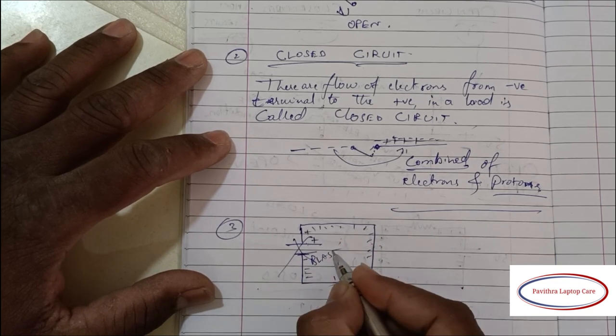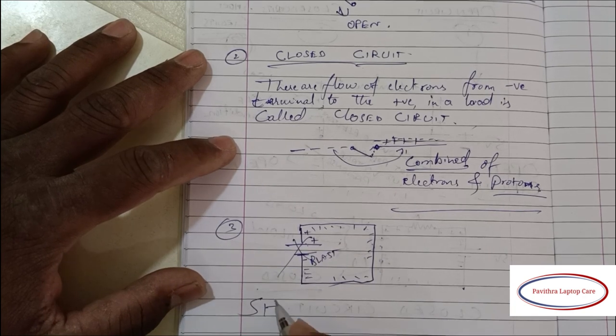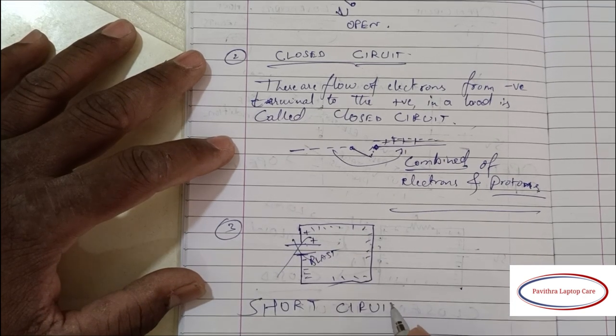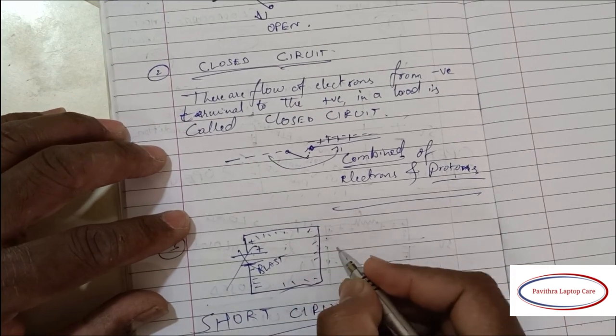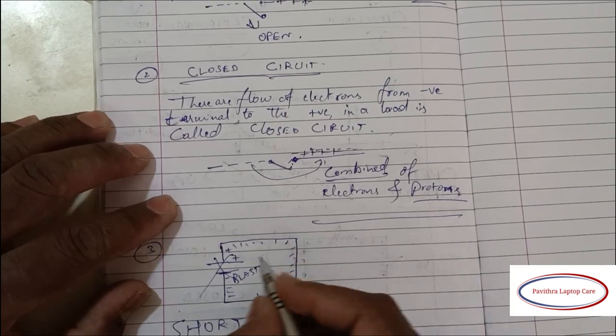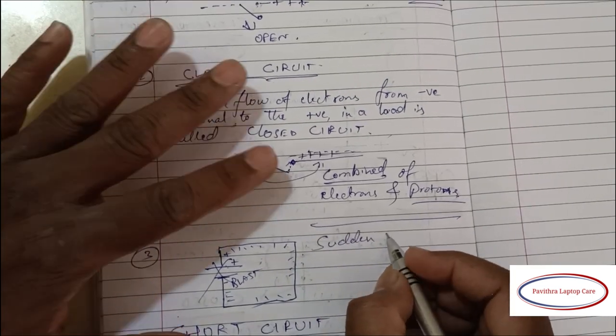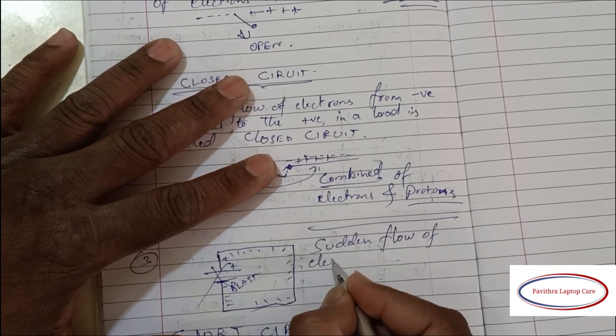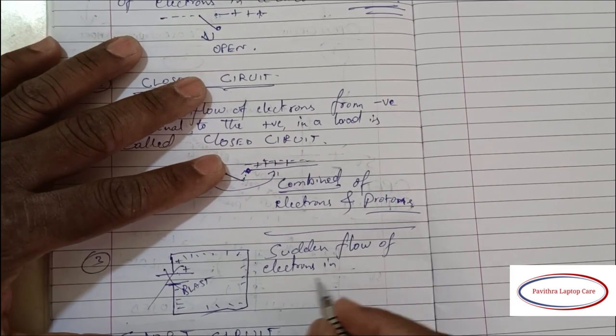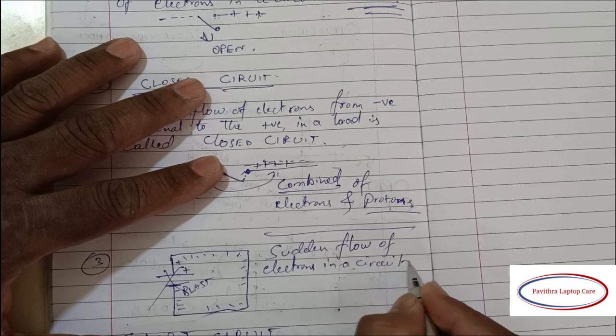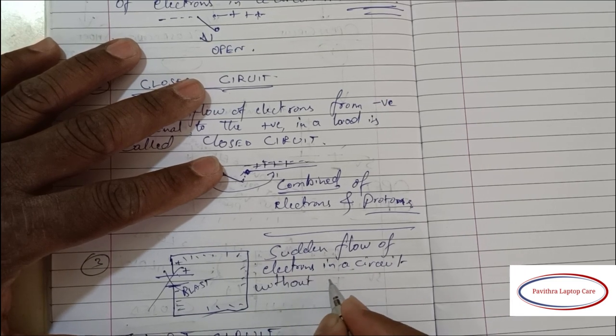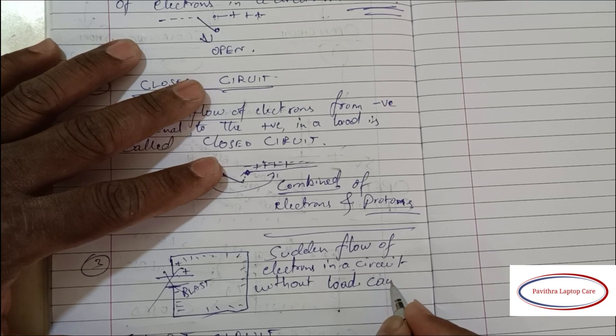In the third condition, we call it a short circuit. See here, there will be no load—plus and minus terminals will be joined. It causes damage to the circuit because the sudden flow of electrons will occur here. So this is not recommendable.